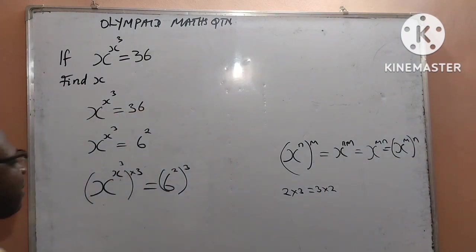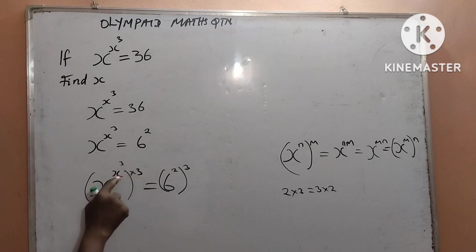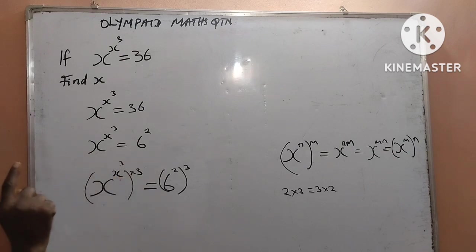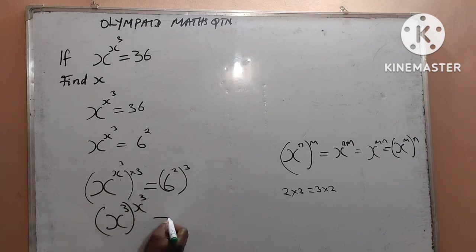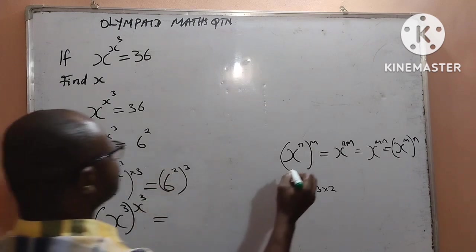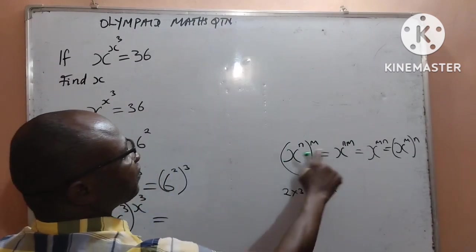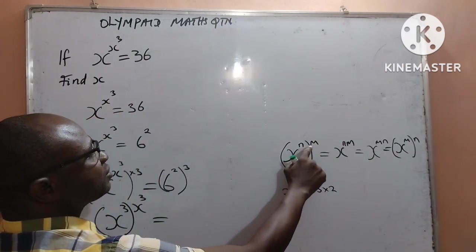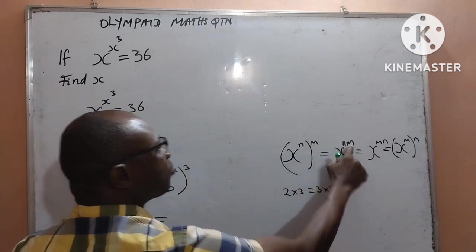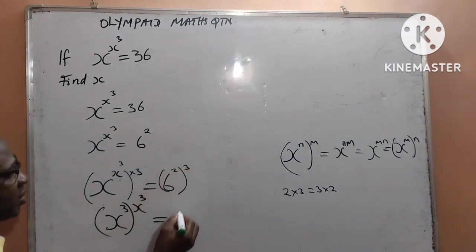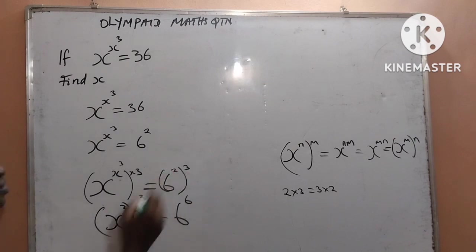I will apply this on the left hand side, interchanging so that x is inside the bracket and 3 is the outer power. That will give me x to the power of 3, all to the power of x to the power of 3, equal to 6 to the power of 2. Now I can multiply the powers 2 and 3 on the right to get 6 to the power of 6. That is 2 times 3.